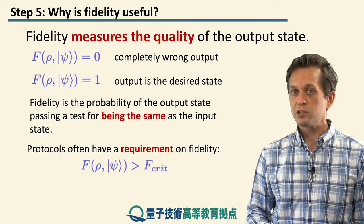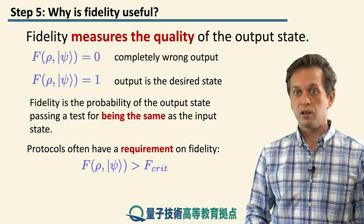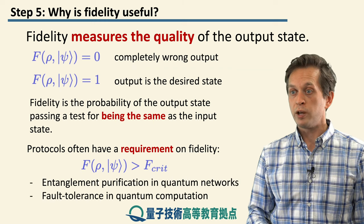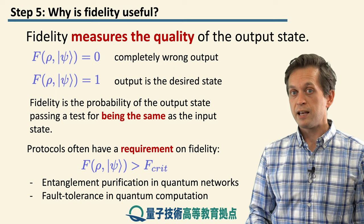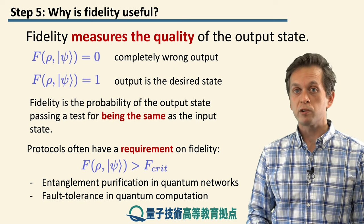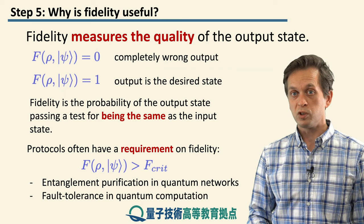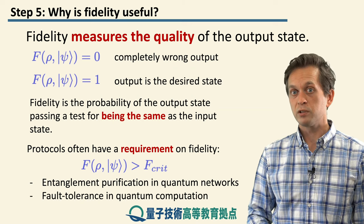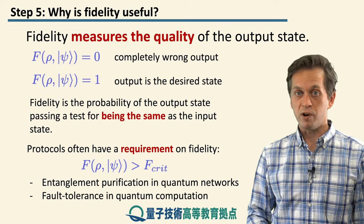And also, many protocols in communication and quantum computation use fidelity as some type of requirement for your task to work. For example, if you want to do entanglement purification in quantum networks, your initial fidelity has to satisfy a certain criterion of being higher than some critical fidelity. Similarly, if you want to do fault tolerance in quantum computation, there are thresholds theorems which tell you that in order to be able to apply fault-tolerant quantum computation, you must satisfy some initial fidelity requirement.